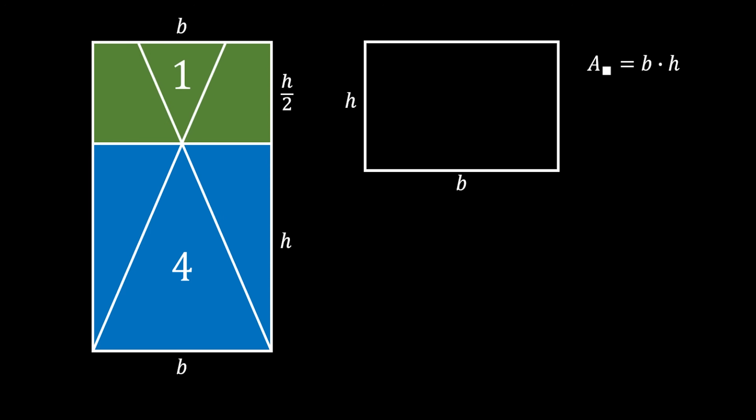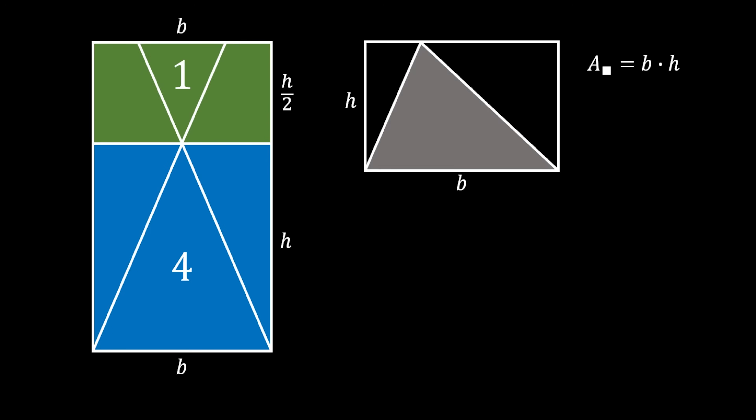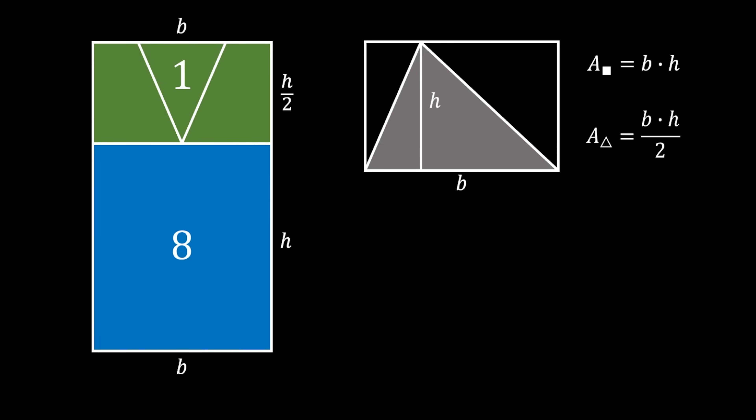We also know that those two rectangles share the same base, which we can label as b. As a quick reminder: if we have a rectangle with base b and height h, its area equals the product of base and height. Furthermore, if we inscribe a triangle inside the rectangle so that it shares the same base and height, the area of the triangle will be equal to half the area of the rectangle. Our blue rectangle also has a triangle which shares the same base and height, so the area of the whole blue rectangle must be 2 times bigger than the area of our triangle. Since our triangle has the area of 4, our blue rectangle has the area of 8.